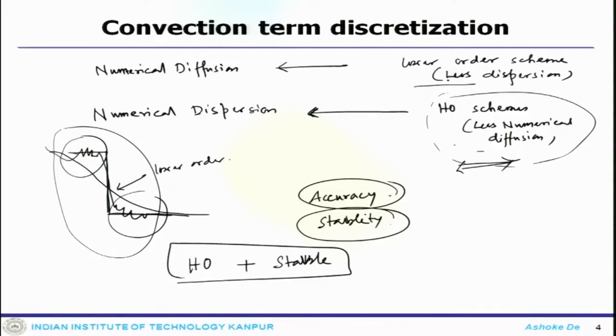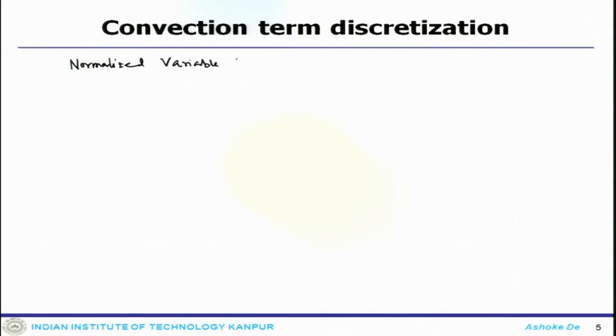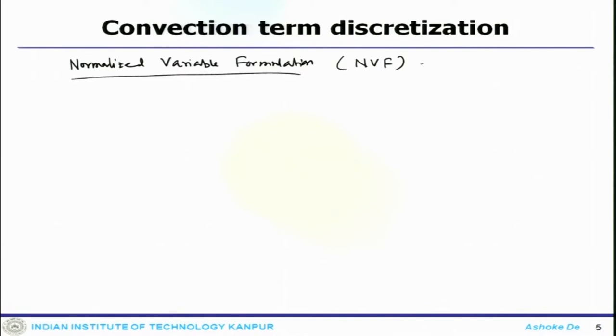That is what one needs to find out — how we can devise those kinds of high resolution schemes. When you talk about those high resolution schemes, they are formulated based on Normalized Variable Formulation, which is known as NVF. This higher order resolution scheme can be formed or coined using this concept of normalized variable formulation, which is the framework that can be used for description as well as analysis of higher order high resolution schemes.